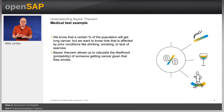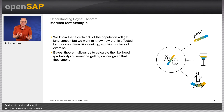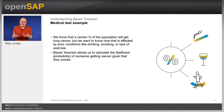Let's look at an example involving medical tests. Medical tests are rarely perfect and can produce inaccurate results. We can test the accuracy of a medical test using Bayes' Theorem. We know that a certain percentage of the population will, for example, get lung cancer, but we want to know how that is affected by prior conditions such as drinking, smoking, or lack of exercise. Bayes allows us to calculate the likelihood of someone getting cancer given that they smoke.